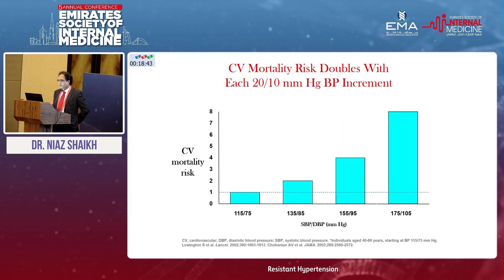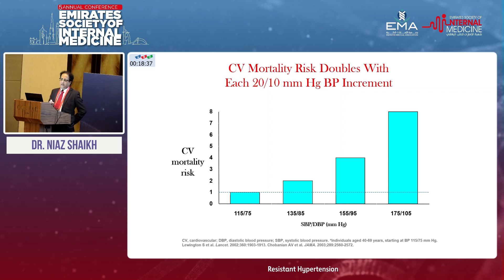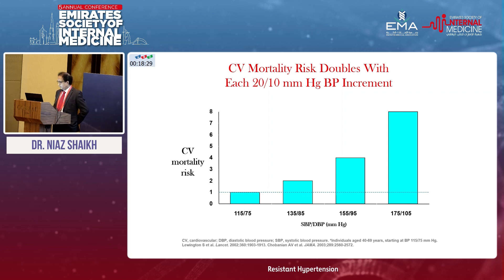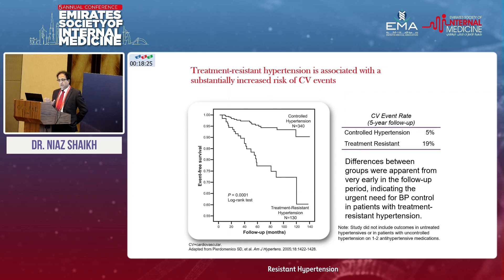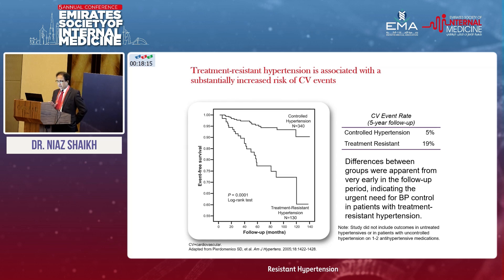We should also understand that each 20 millimeter systolic blood pressure and 10 millimeter diastolic blood pressure rise is associated with doubling of the overall cardiovascular mortality. There is no surprise therefore that the incidence of overall cardiovascular events is much higher in patients with resistant hypertension as well as refractory hypertension.